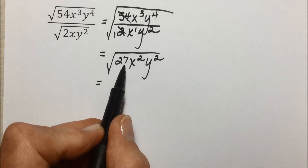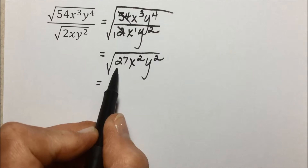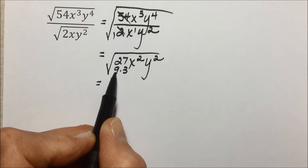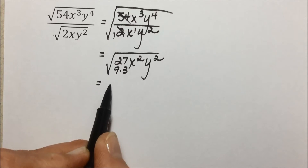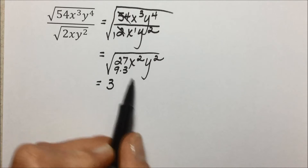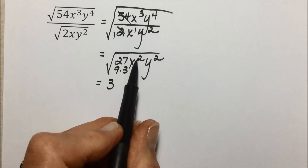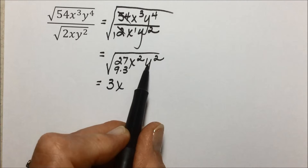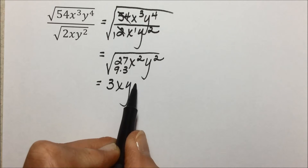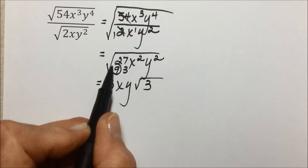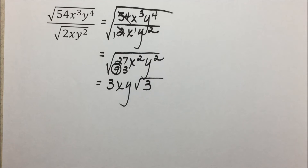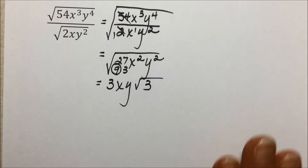27 isn't a perfect square, but 27 is 9 times 3, and 9 is a perfect square since 3 times 3 is 9. So the square root of 9 is 3, with a 3 remaining underneath the radical. The square root of x² is x, the square root of y² is y, and we have that remaining 3 under the radical. So our simplified answer is 3xy√3.